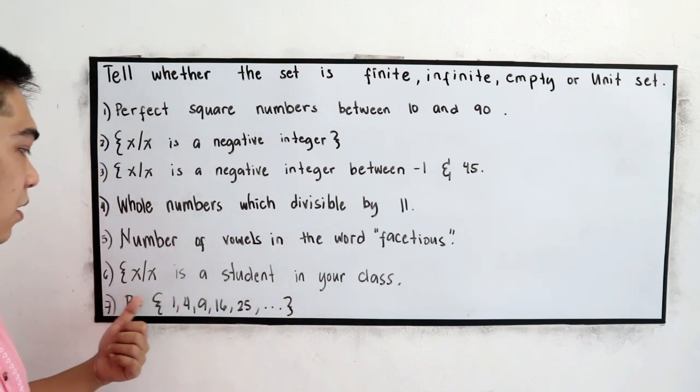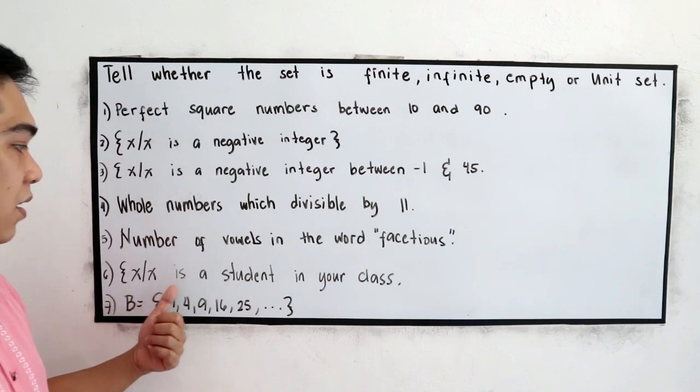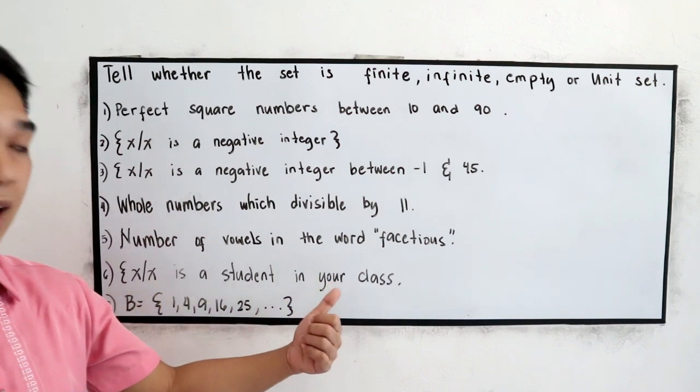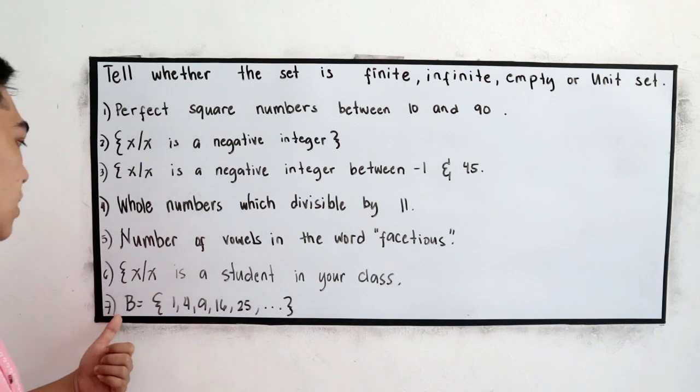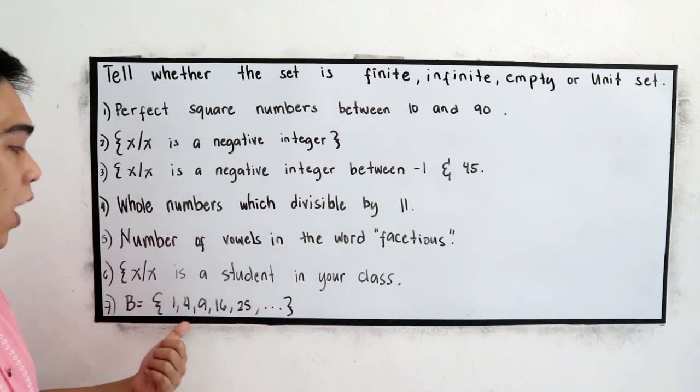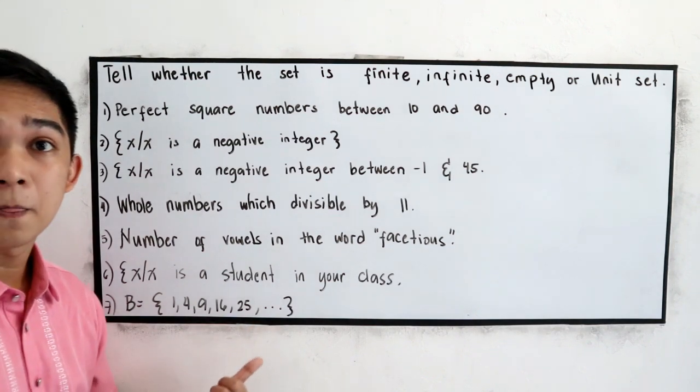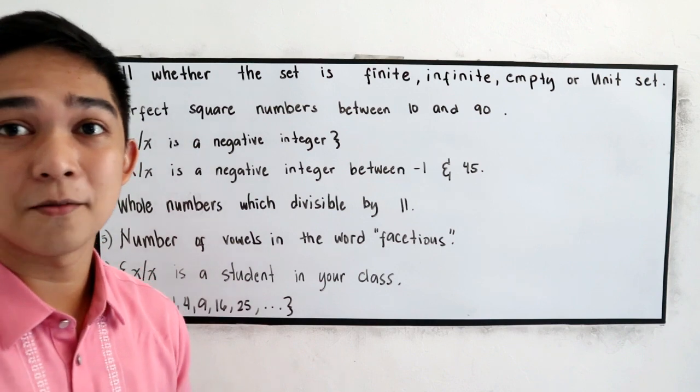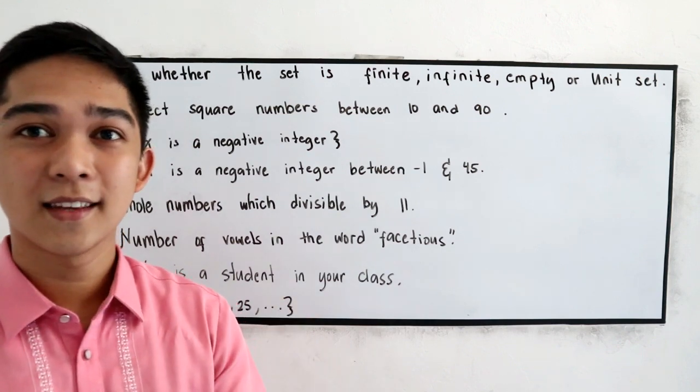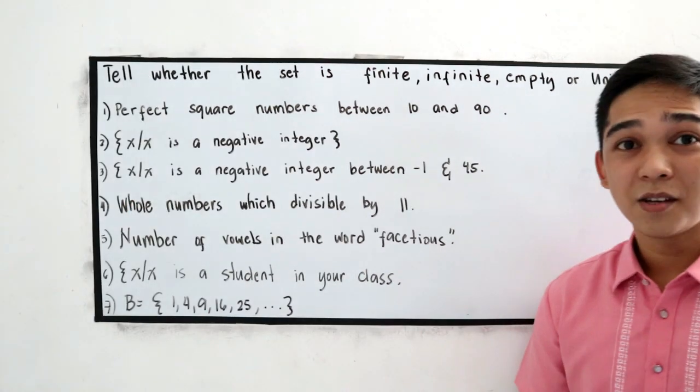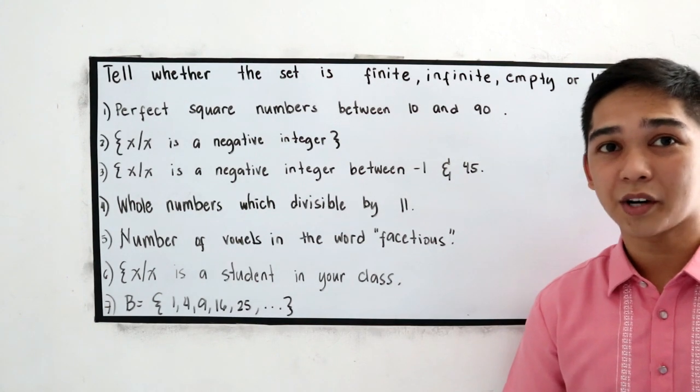Six, x such that x is a student in your class. Seven, b is equal to 1, 4, 9, 16, 25, and the ellipsis sign. So you can pause the video. Then, since you are done, now let's check your work.